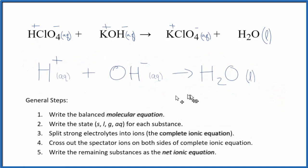And this is the balanced net ionic equation for perchloric acid plus potassium hydroxide. You'll notice that charge is balanced. We have a positive and a negative, cancel out, we have a neutral compound. And mass is conserved as well. We have two hydrogens in the reactants, two in the products, one oxygen, one oxygen.